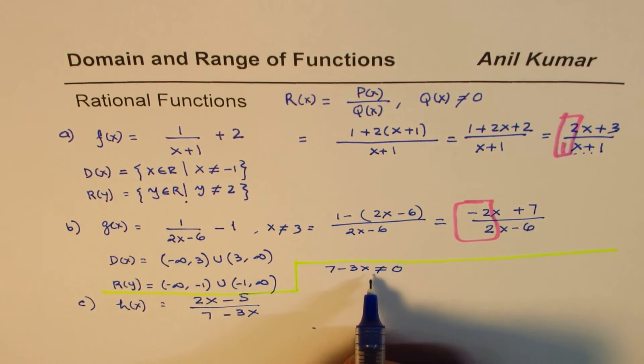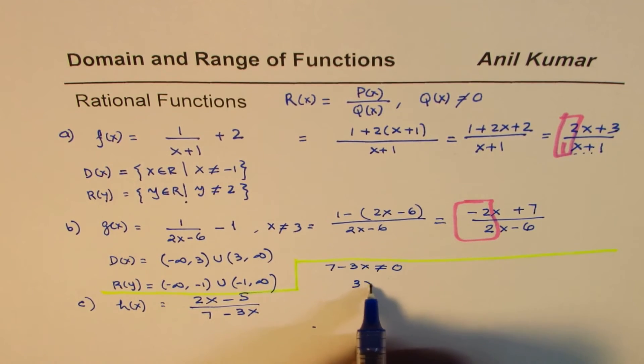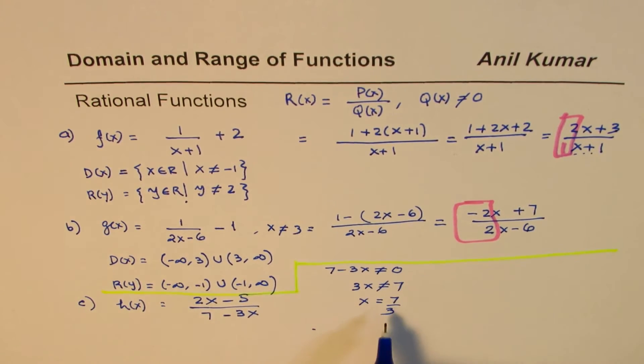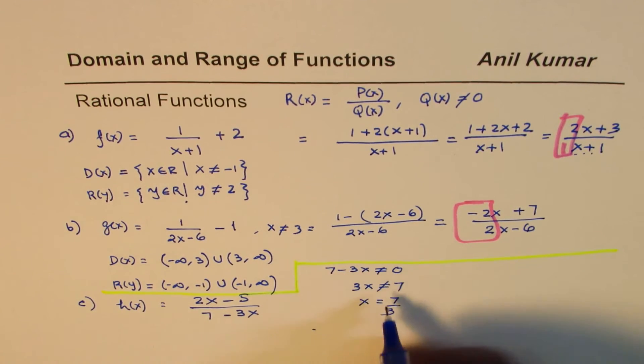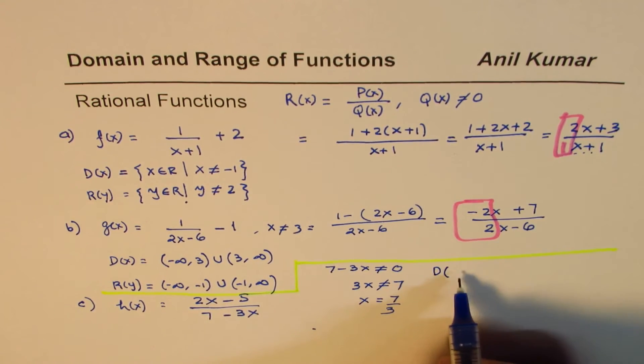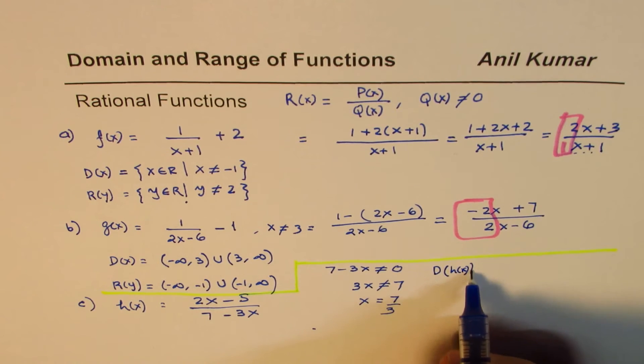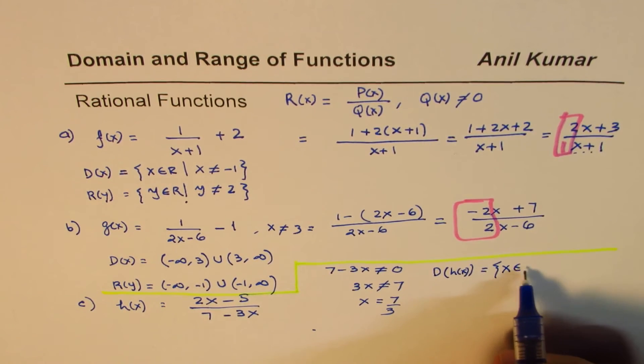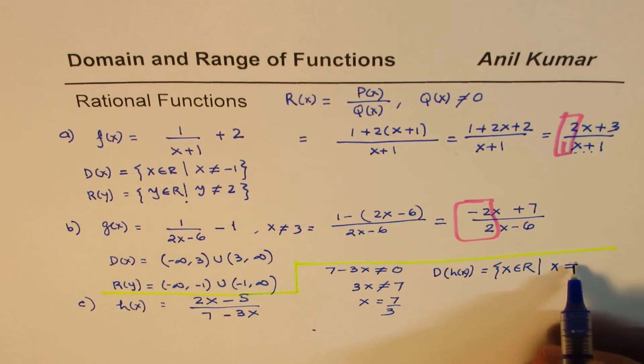So we try to solve this up. We say 3x is not equal to 7, x is not equal to 7/3. That is for the domain part. So domain for this function, which is h(x), is equal to x belongs to real numbers, where x is not equal to 7/3.